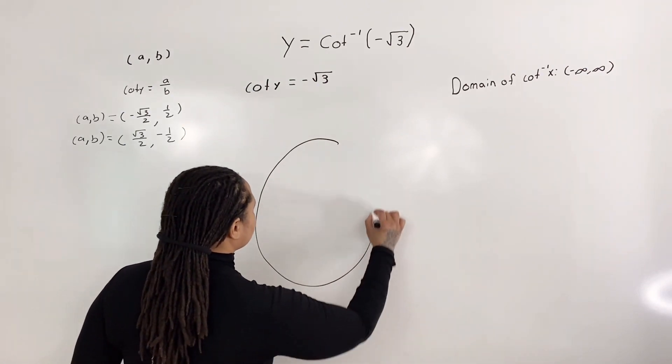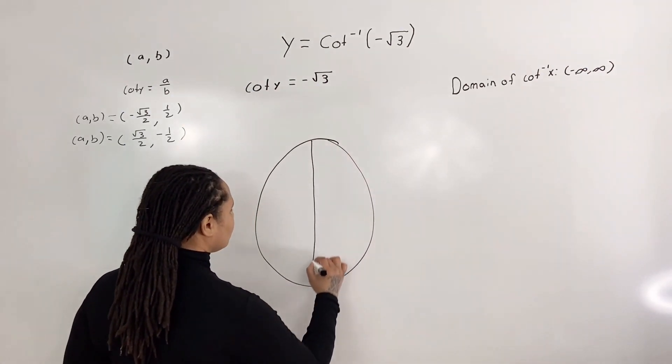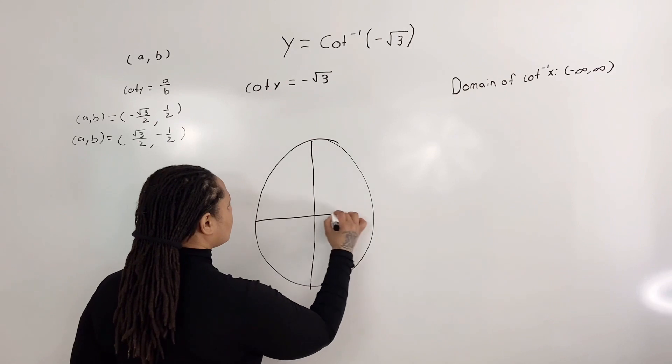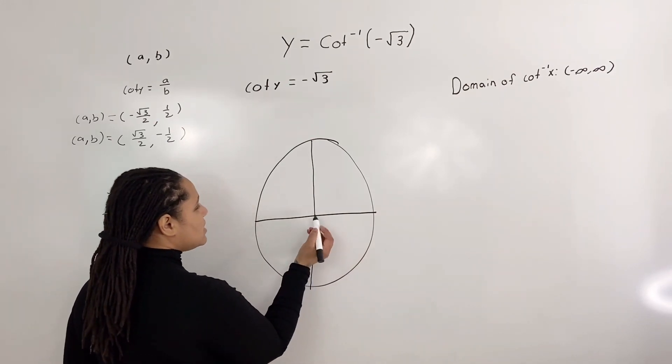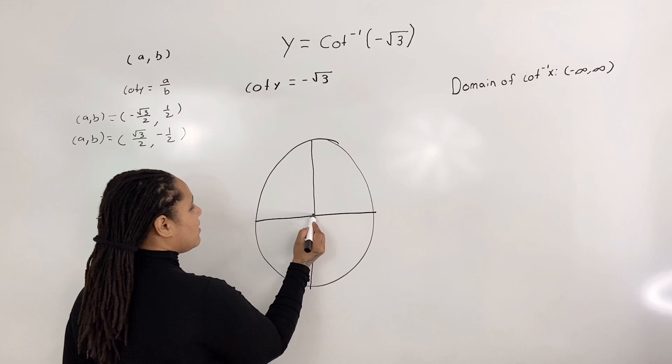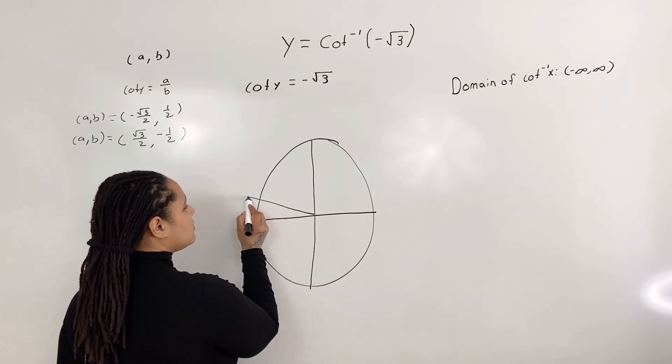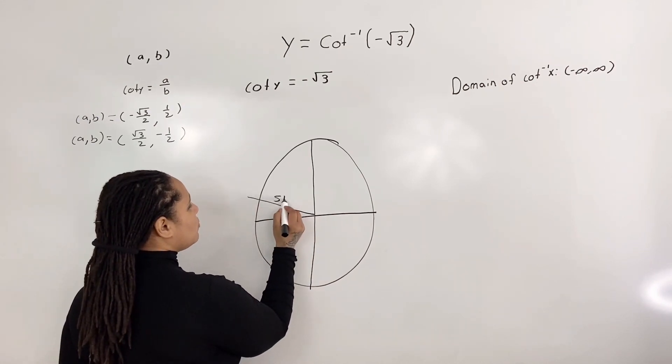in the second quadrant, we have 5 pi over 6.